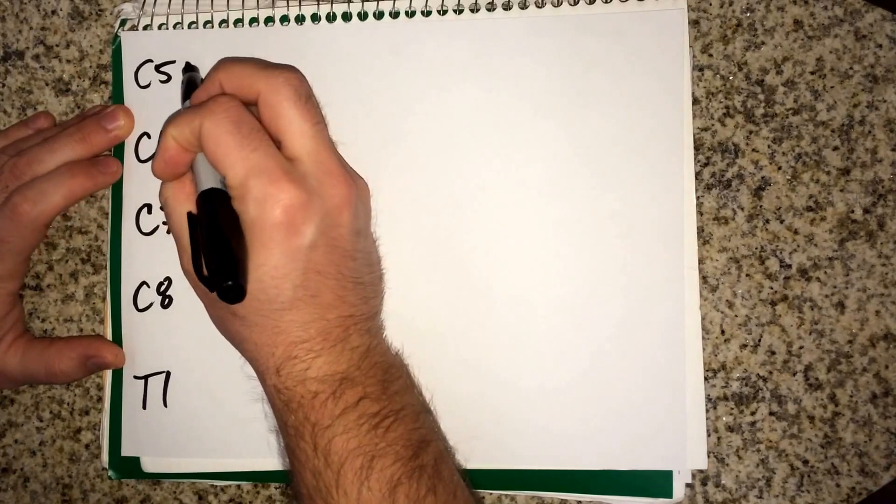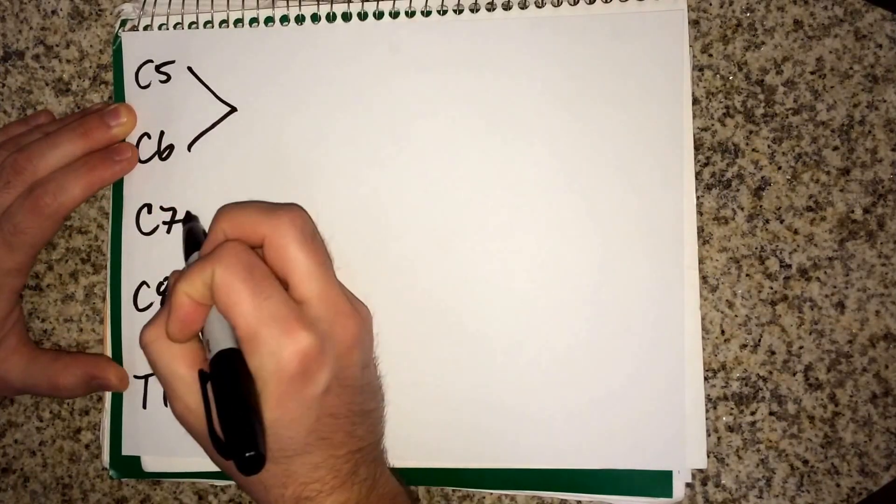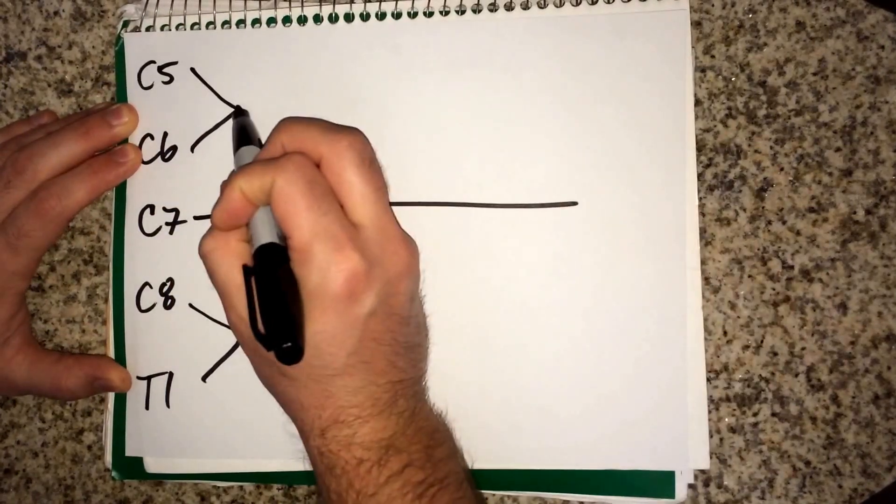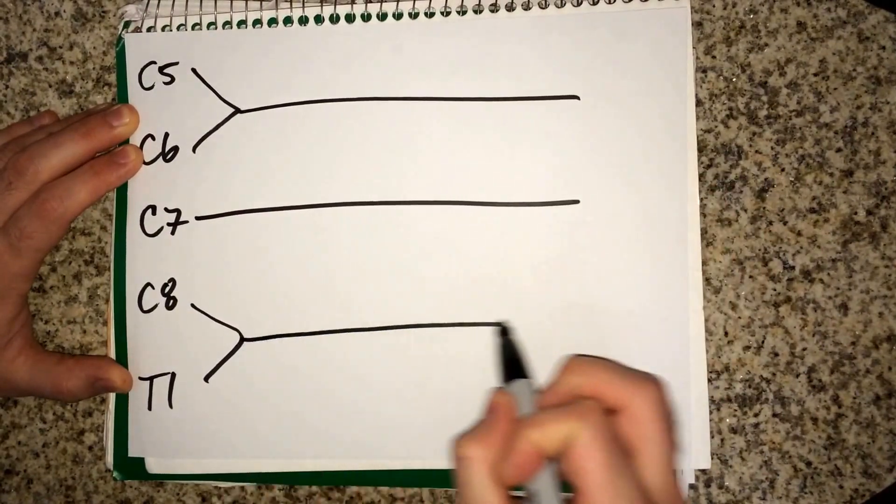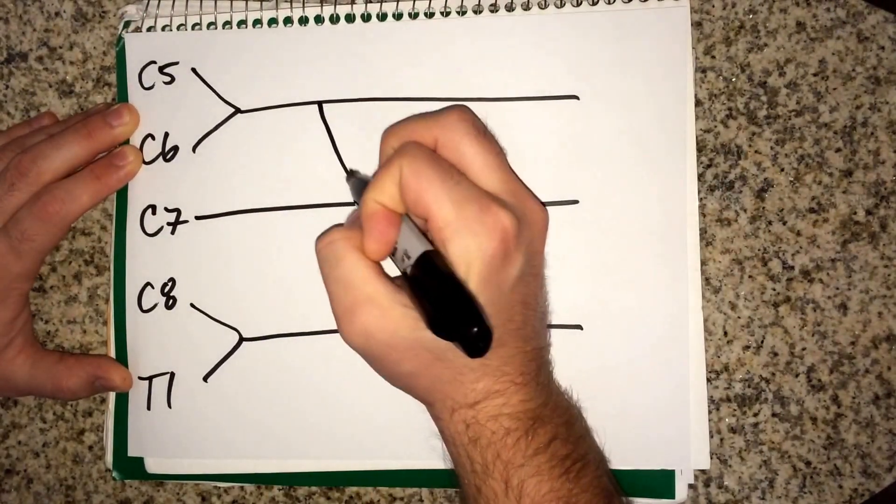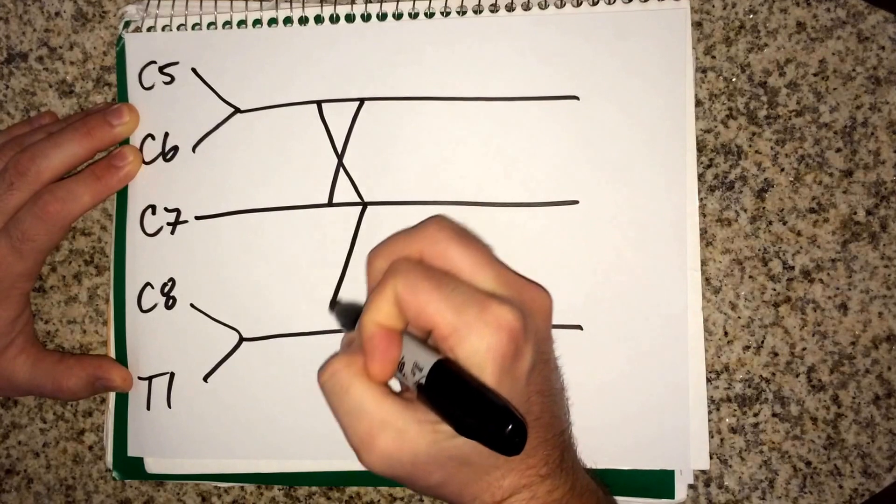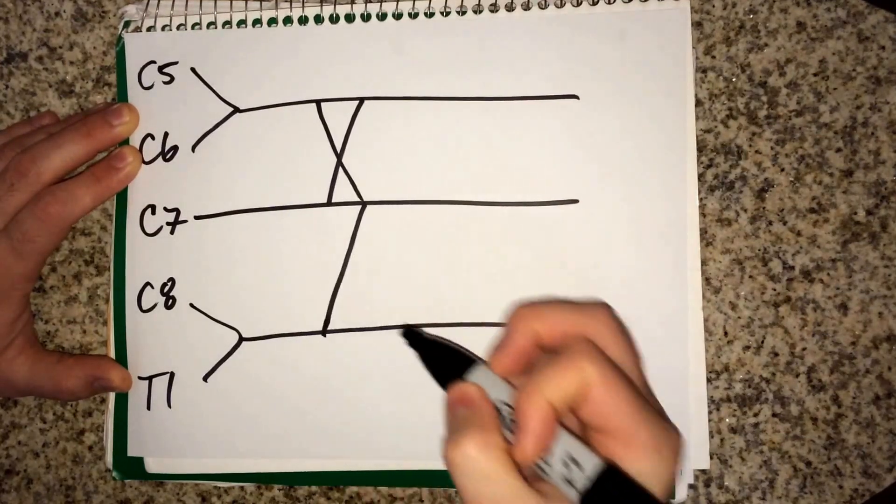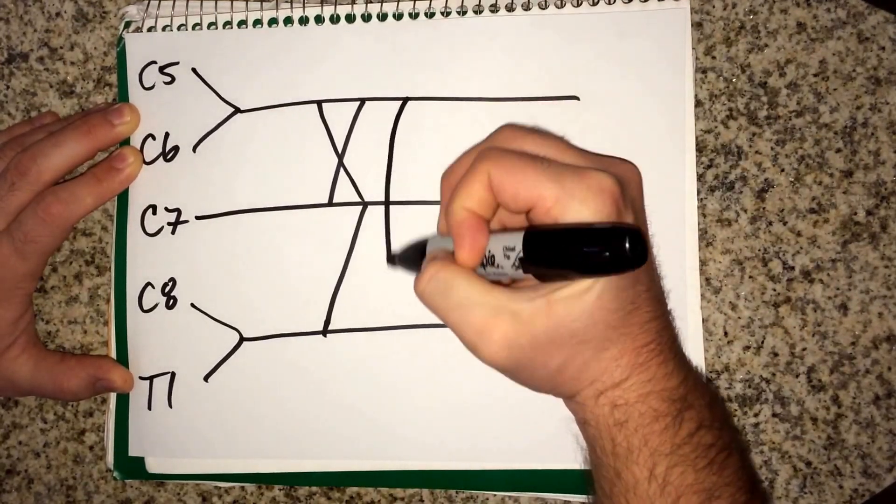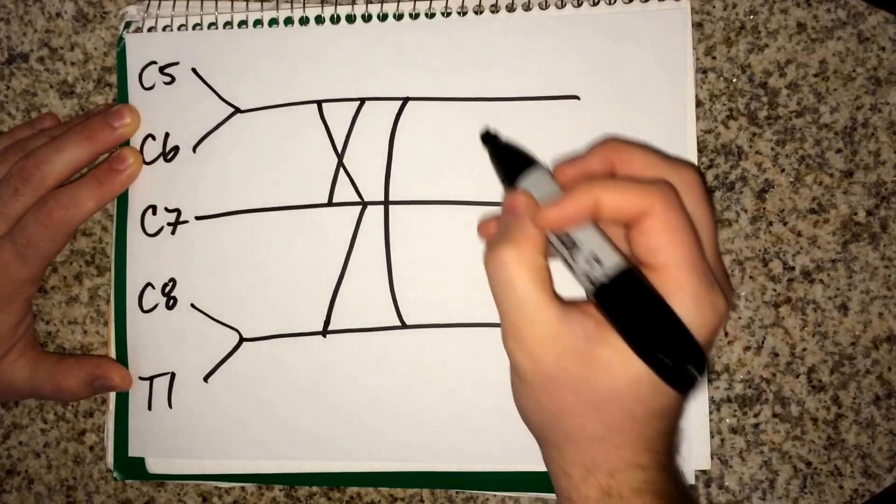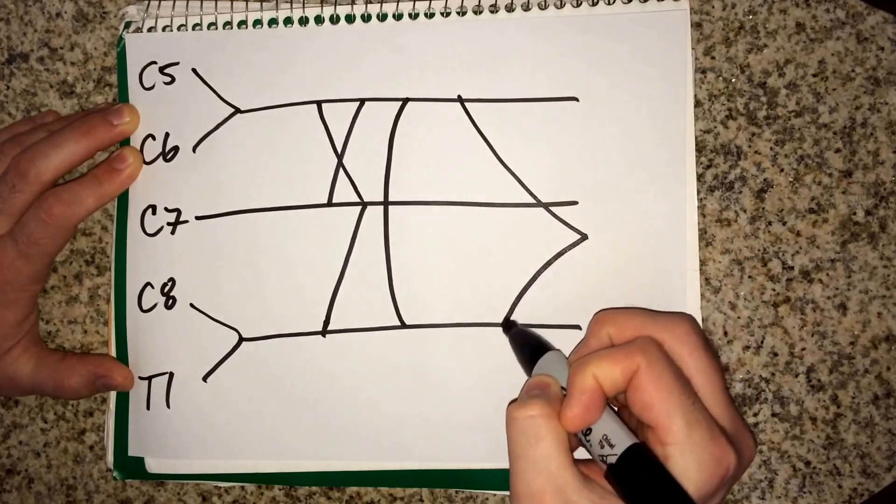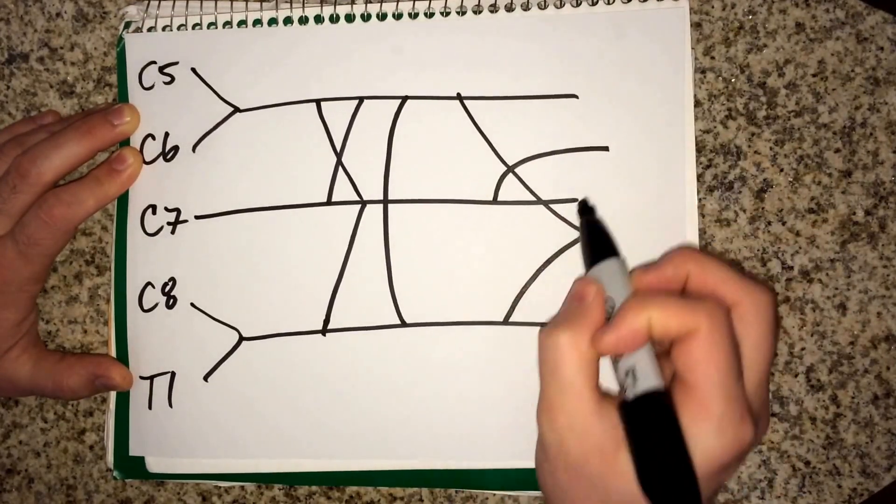And then what you're going to do next is you're going to make these little wedges here and some lines coming over. Then you want to do an X and another little line here. You want to branch those, make this other wedge right here and another branch off.